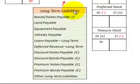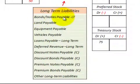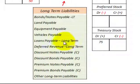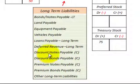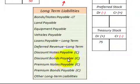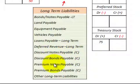Looking at long-term liabilities as part of our financing activities: these would include bonds and notes payable, long-term notes payable, other payables such as land, equipment, vehicles, and loans payable, and also deferred long-term revenue. Discounts and premiums that have to be amortized on our bonds and notes payable would not be included in the change in cash for financing activities — those are recognized as a non-expense or non-revenue as part of net income. Then you'd also have other long-term liabilities.